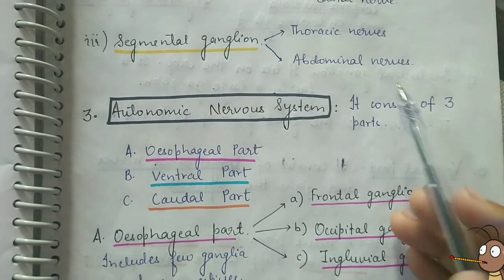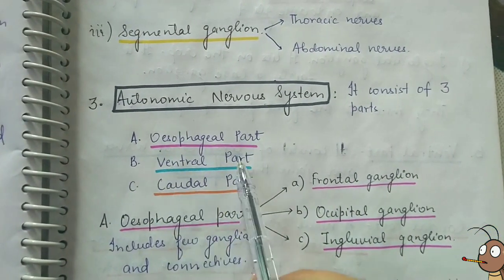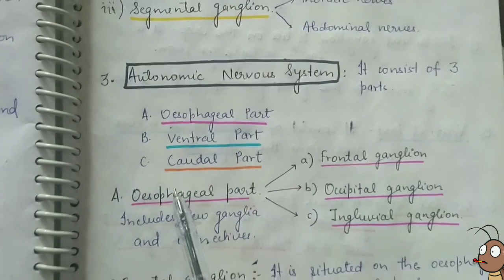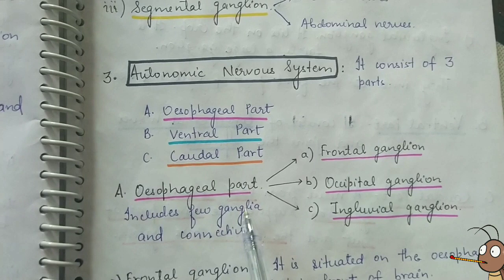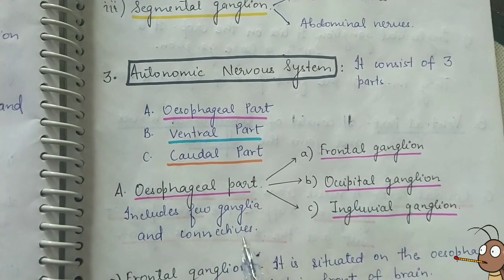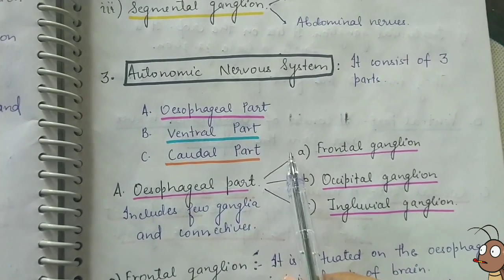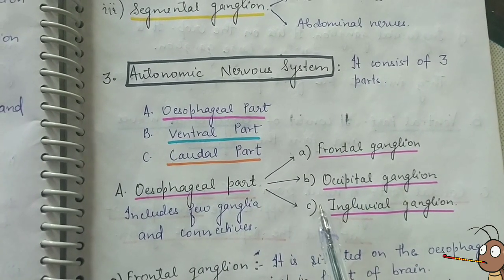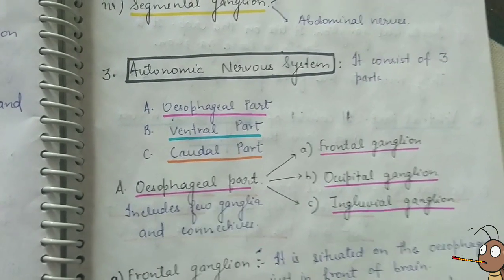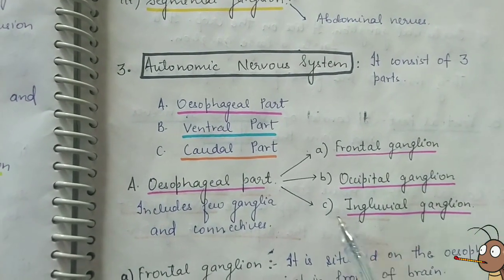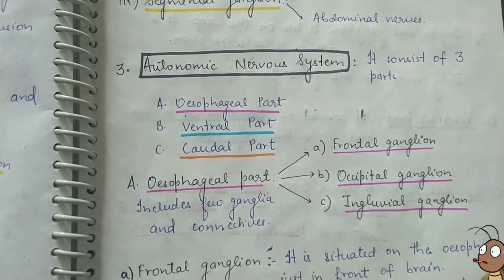The autonomic nervous system further consists of three parts: the esophageal part, ventral part, and caudal part. The esophageal part includes a few ganglia and connectives, and is further divided into the frontal ganglion, occipital ganglion, and inglovial ganglion. These three are interconnected with each other.